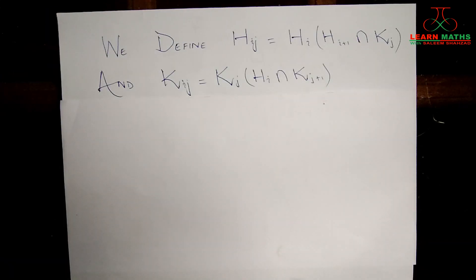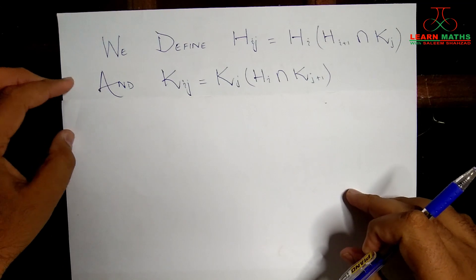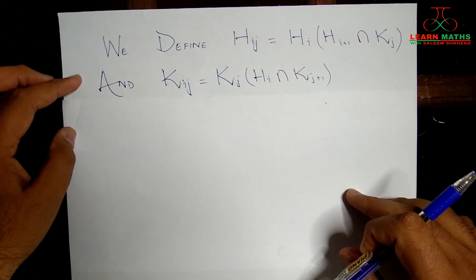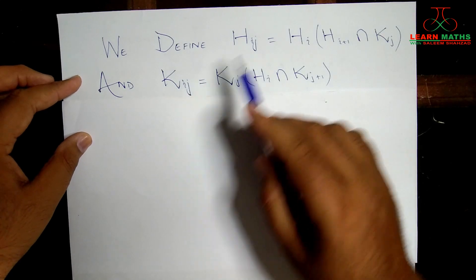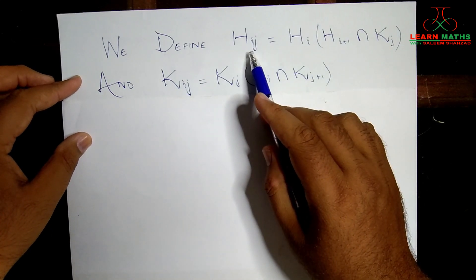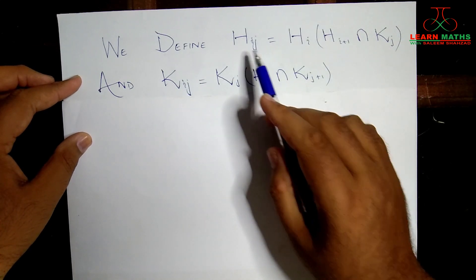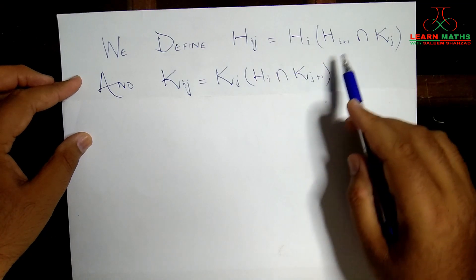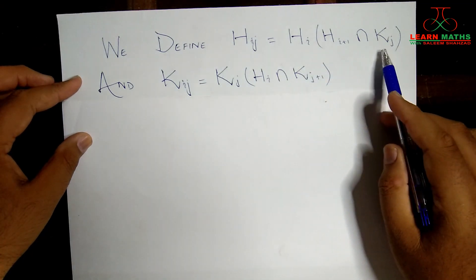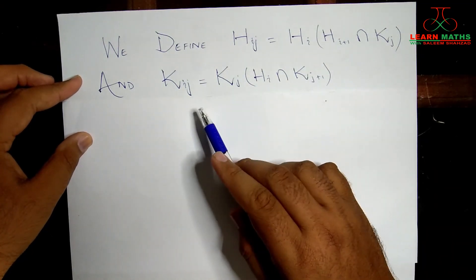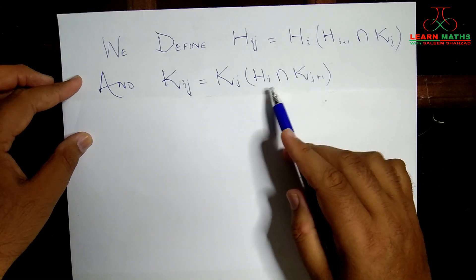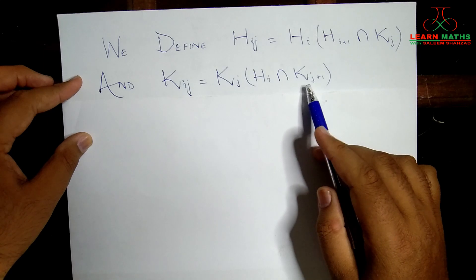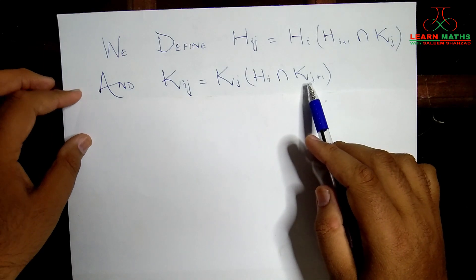Next, we consider two classes of subgroups of the group G. One is H_{ij} and the other is K_{ij}. The subgroups H_{ij} are formed by the multiplication of H_i with H_{i+1} intersected with K_j. The subgroups K_{ij} are formed by the multiplication of K_j with H_i intersected with K_{j+1}.